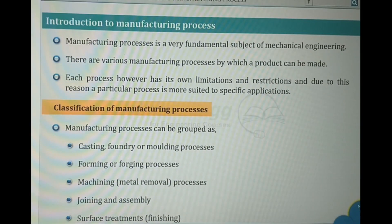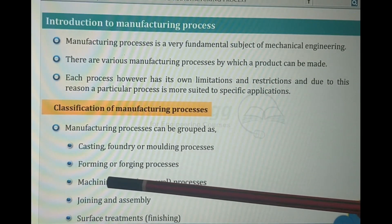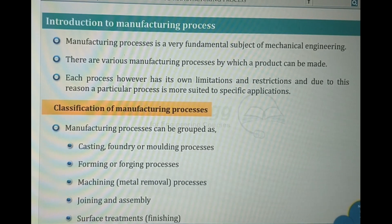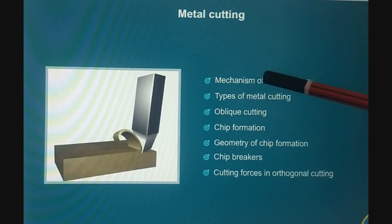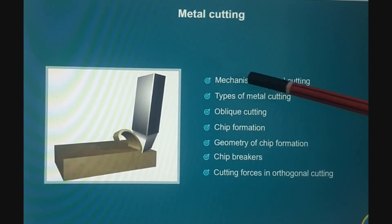First, let us see in detail about machining processes or metal removal processes. In metal cutting processes, before going to the various types of metal cutting processes, first we will see the mechanism of metal cutting.